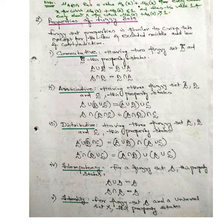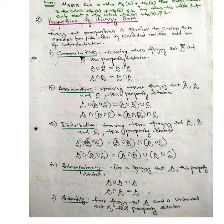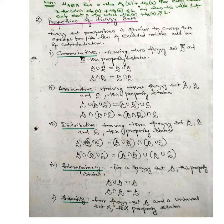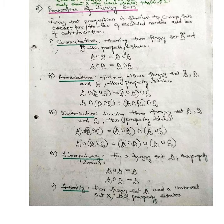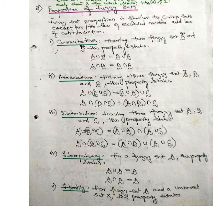The associative property states that A union (B union C) equals (A union B) union C, and A intersection (B intersection C) equals (A intersection B) intersection C. The distributive property states that A union (B intersection C) equals (A union B) intersection (A union C), and A intersection (B union C) equals (A intersection B) union (A intersection C). Idempotency for Fuzzy Set A states that A union A equals A, and A intersection A also equals A.